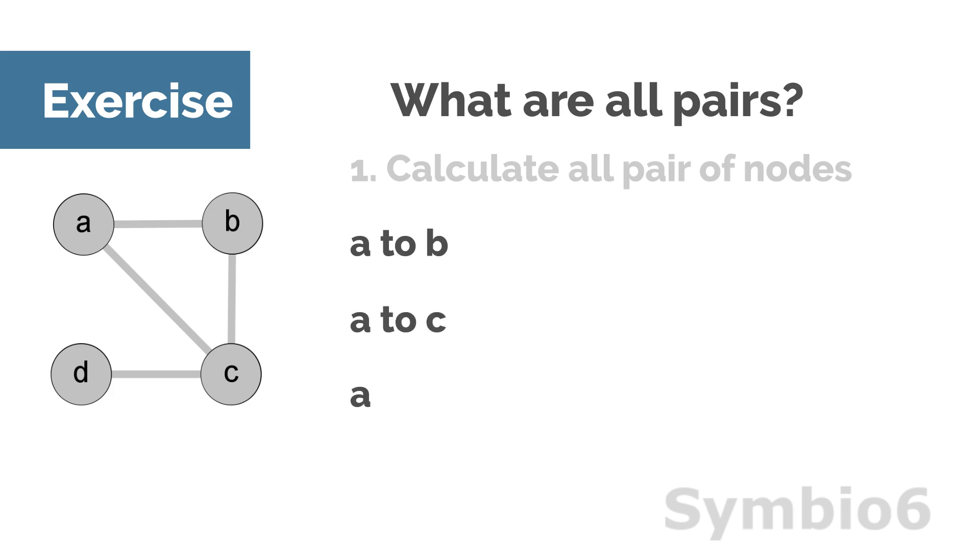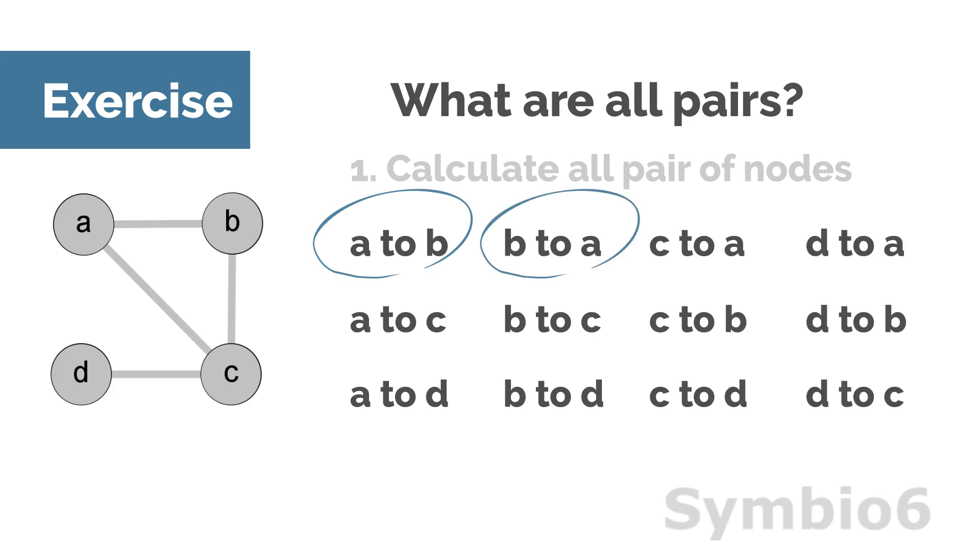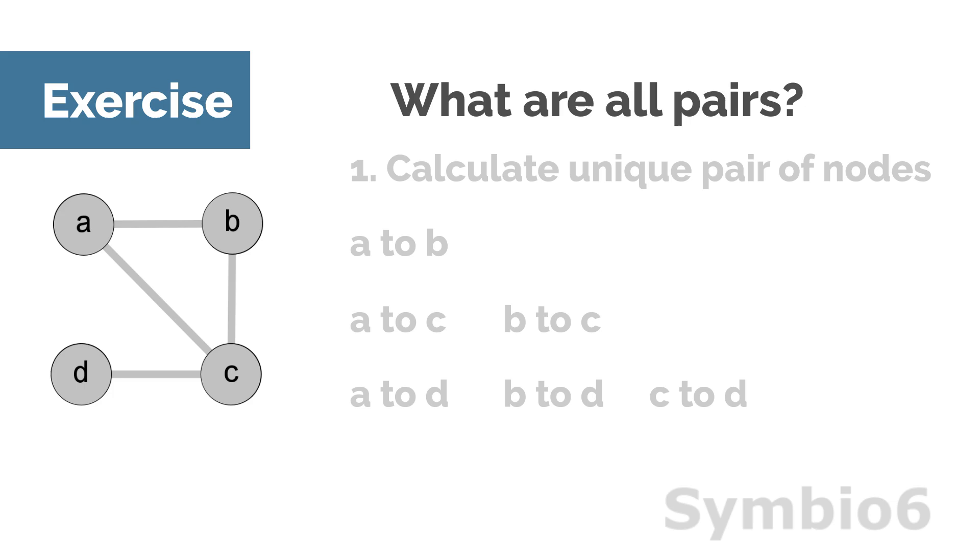In an undirected network, a path from A to B is the same as a path from B to A. To avoid double counting, we can delete half of the pairs. Now we have a list with unique pairs of nodes. In a formula it looks like this.